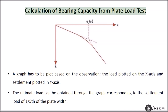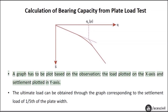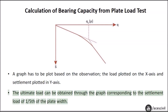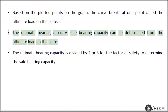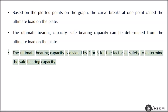Calculation of bearing capacity from the plate load test: A graph is plotted based on the observations, with load on the x-axis and settlement on the y-axis. The ultimate load can be obtained from the graph corresponding to a settlement equal to one-fifth of the plate width. The curve breaks at one point, called the ultimate load on the plate. The safe bearing capacity is determined by dividing the ultimate bearing capacity by a factor of safety of 2 or 3.